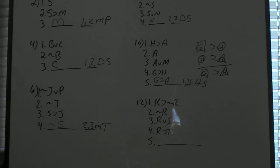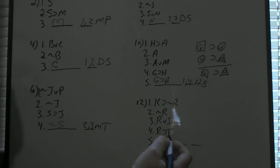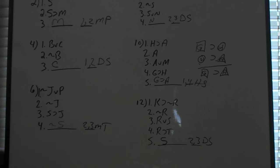For number 12, we have 'if K then not R,' 'not R,' 'R or S,' and 'if R then T.' Lines 2 and 3 are the obvious choice for a disjunctive syllogism: it's either R or S, it's not R, so it has to be S — lines 2 and 3, disjunctive syllogism.